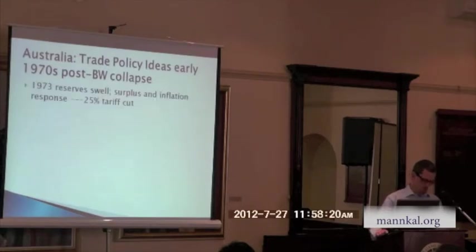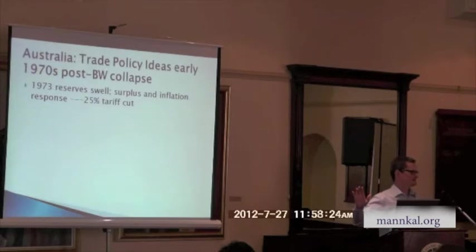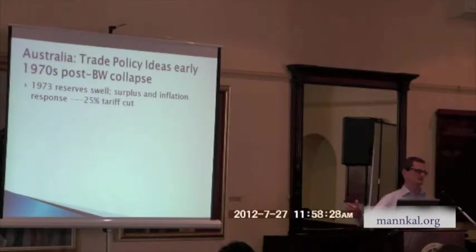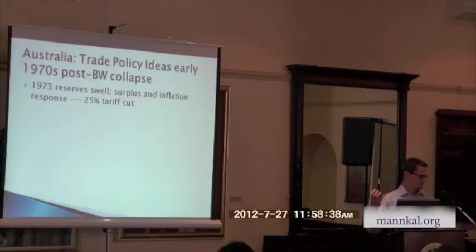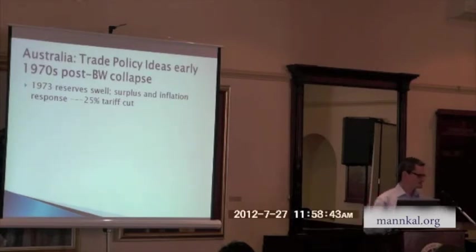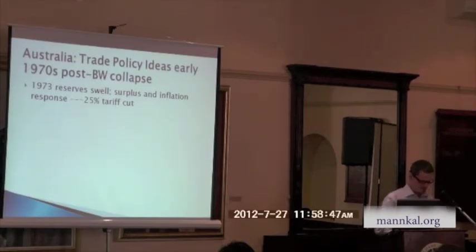In 1973, we have reserve swelling and surplus inflation. A 25% tariff cut — often called the Whitlam cuts, though they were really Fred Gruen's cuts. Fred Gruen was an economic adviser to Whitlam and a leading figure in the liberalisation movement of the 1970s. He makes the point that cutting tariffs is a better way to deal with a surplus and inflation as well.